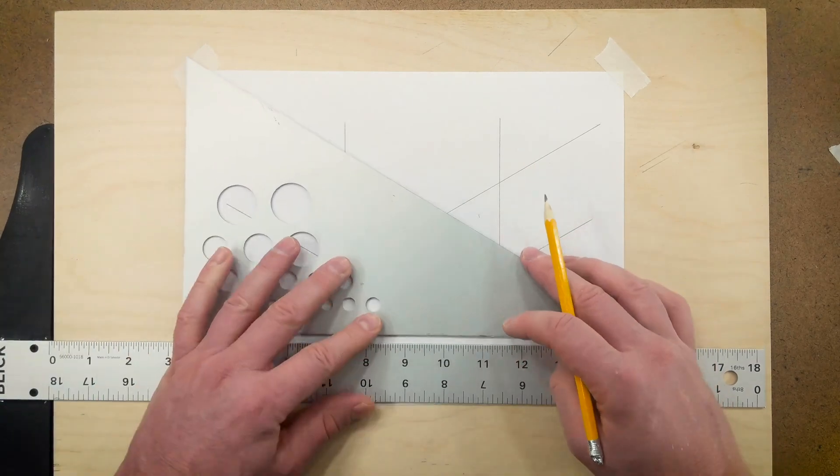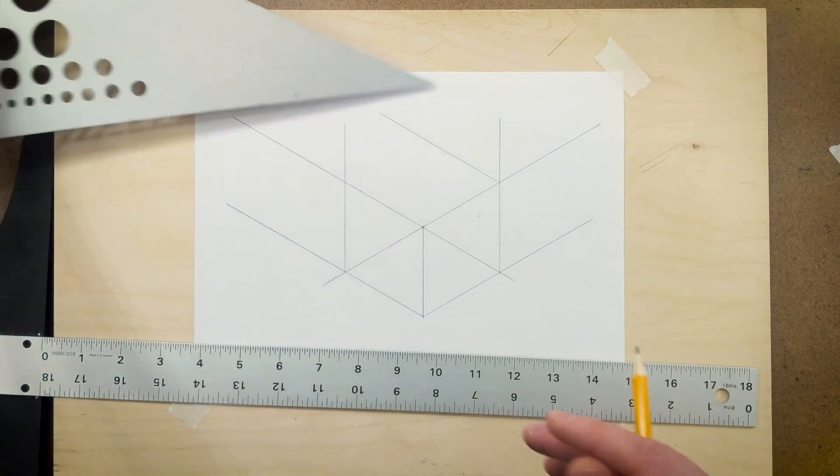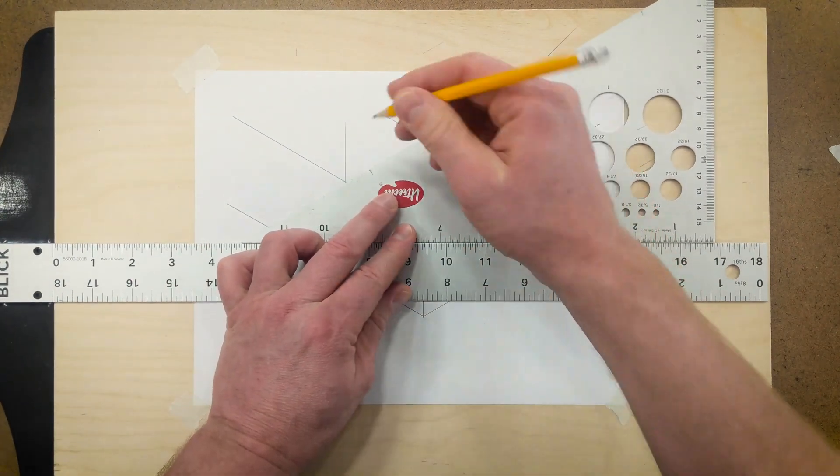Next we can flip our triangle over and start at this mark. Draw a cross with the triangle at 30 degrees. And then here you can draw the final line going the other direction.